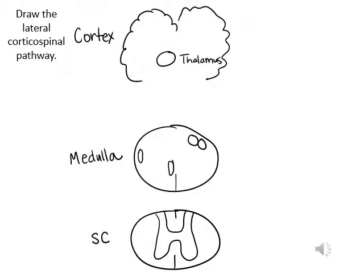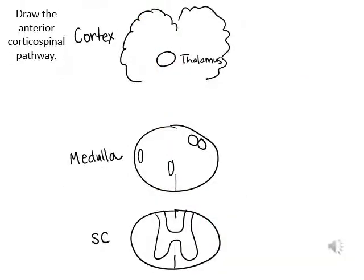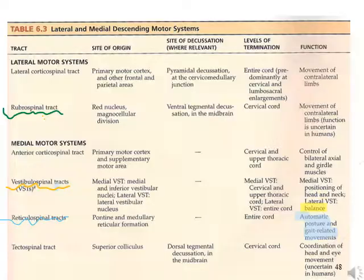You can try to draw the lateral corticospinal pathway picture, and then try the anterior corticospinal pathway. Besides the lateral and anterior corticospinal tracts, we also have other descending tracts.